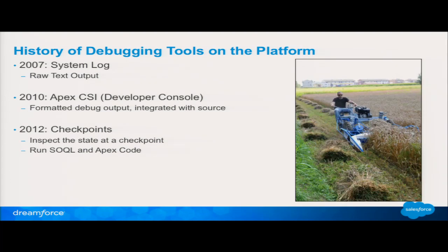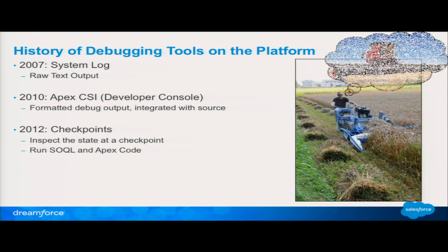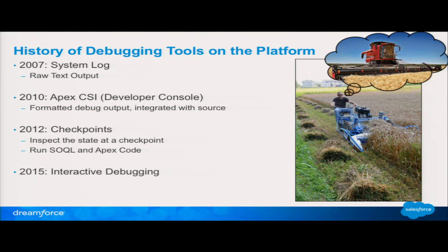The checkpoints feature lets you put something that looks tantalizingly like a breakpoint in the gutter. After you run a transaction, you can see more information — you can see the heap at that time, you can run Apex code at that time. It gives you a little more data. But still, he's got a better tool now but he's still dreaming of something better, still thinks he can do better than this. So we're going to move forward. Next year we'll be releasing an interactive debugger for Apex.